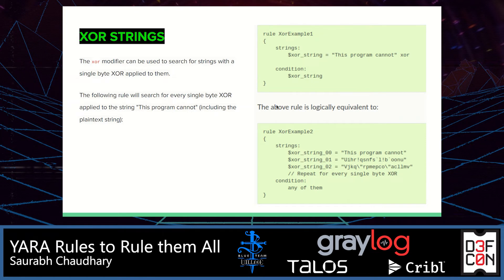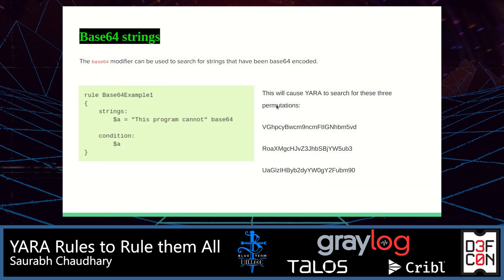If with your YARA rule you can only detect one single file, then it's no better than using a hash. We also have base64 strings — used in a rule just like XOR, it will detect matches even at the byte level of the code. For example, if a C2 address is base64-encoded, you can write an expression to detect it, and this rule will detect all permutations of the base64-encoded string.